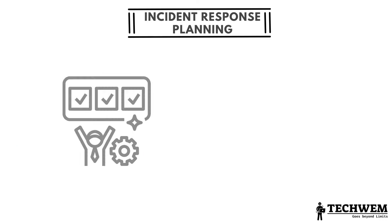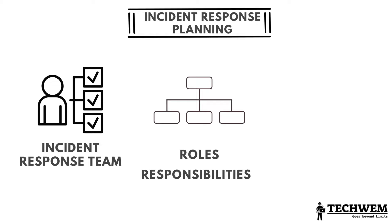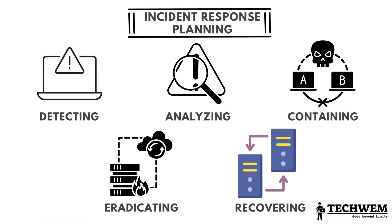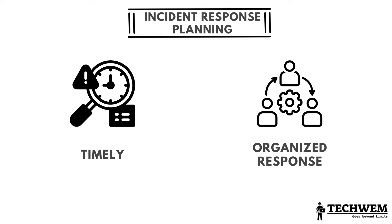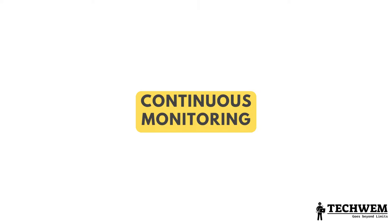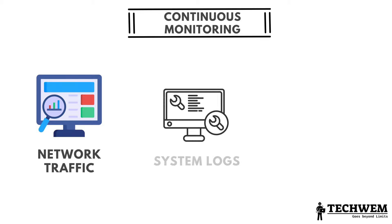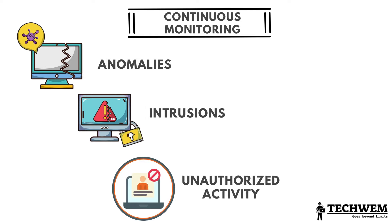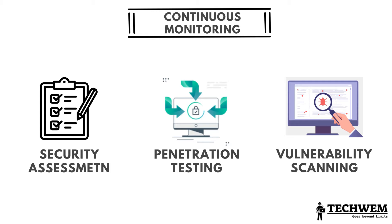Number 5: Incident Response Planning — developing a documented and well-defined strategy to respond effectively to cybersecurity incidents. This includes establishing incident response teams, defining roles and responsibilities, and documenting procedures for detecting, analyzing, containing, eradicating and recovering from security incidents. Incident response plans ensure a timely and organized response to minimize the impact of an incident. Number 6: Continuous Monitoring — the ongoing surveillance of the OT system's security posture. This includes real-time monitoring of network traffic, system logs and security events to detect anomalies, potential intrusions or unauthorized activities, as well as regular security assessments, penetration testing and vulnerability scanning to identify emerging threats and vulnerabilities.